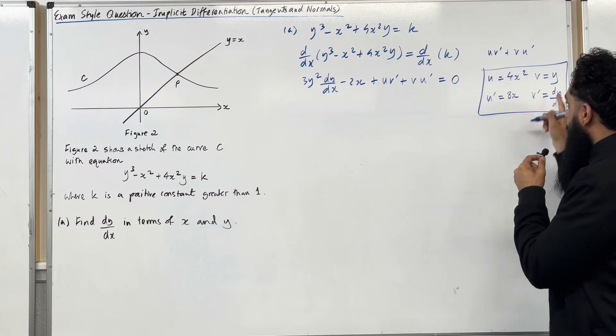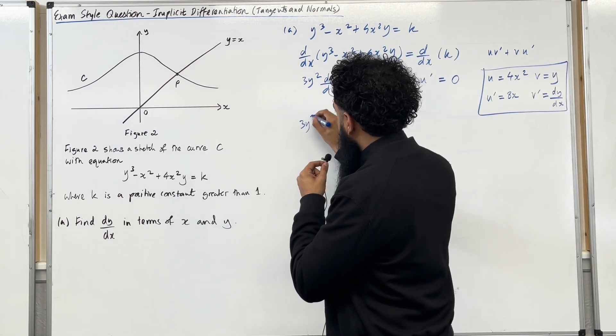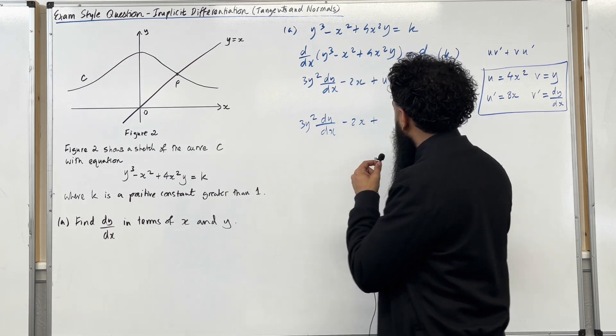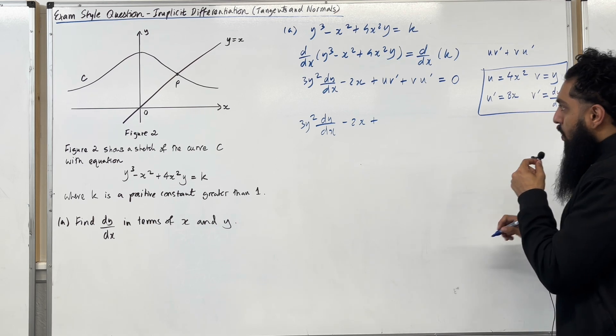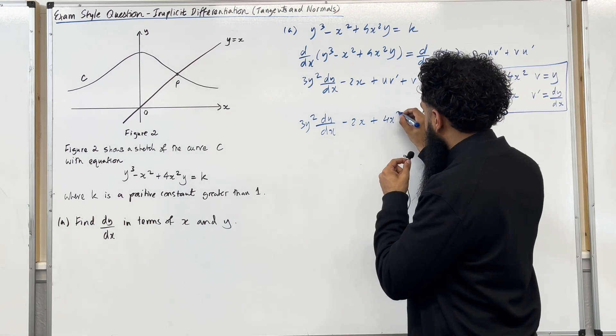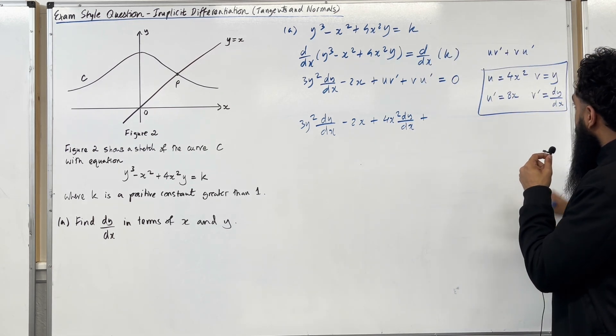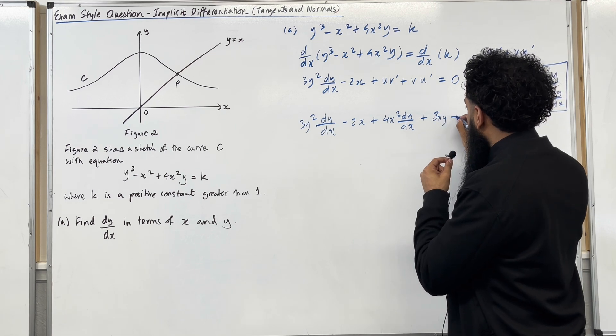So I can substitute all of that back into here. I've got 3y squared dy over dx minus 2x plus u v dash. That will be 4x squared multiplied by dy over dx. Plus v u dash, y multiplied by 8x, which is 8xy equal 0.